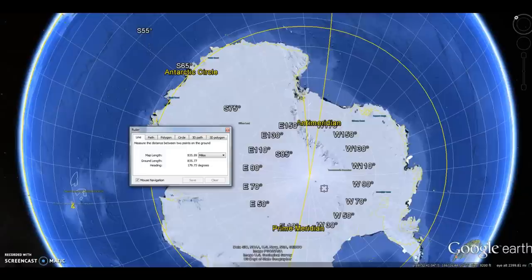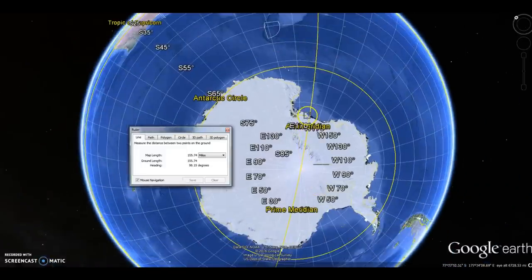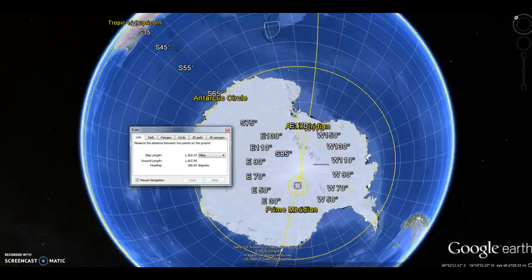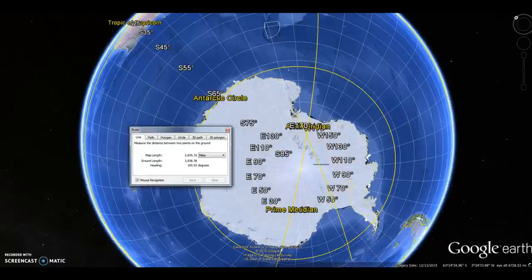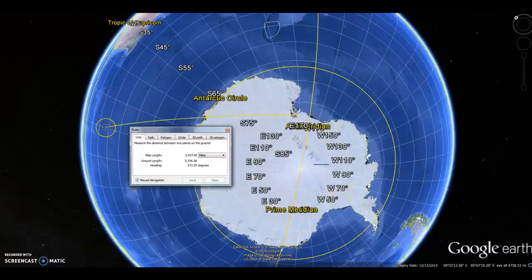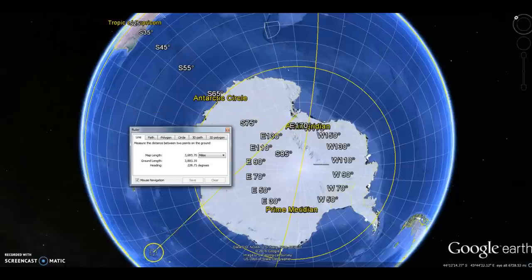So what I believe is happening here is we're being deceived. I believe what is happening is Antarctica is basically the outer ice ring, just as various Flat Earth maps say it is. They found the South Pole on the Flat Earth map, and they found the North Pole. I don't know where they are.